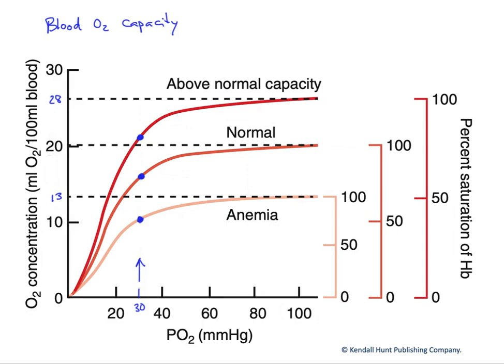In this figure, we want to look at blood's O2 capacity — in other words, how much oxygen can it carry per unit volume of blood? This is indicated by our y-axis over here, the O2 concentration: the mils of O2 per unit volume of blood.